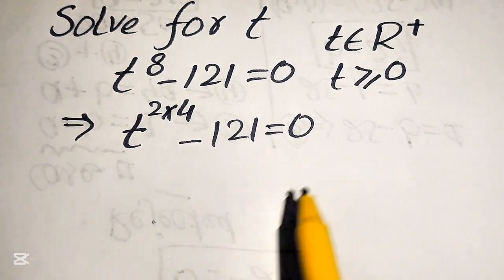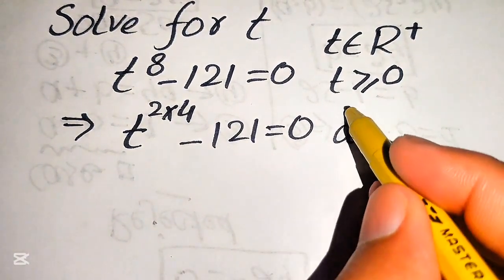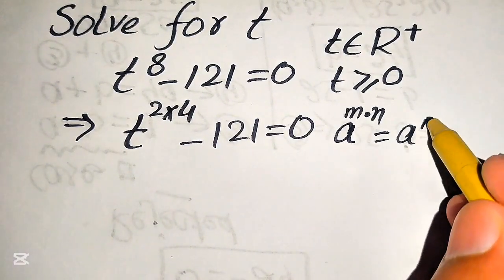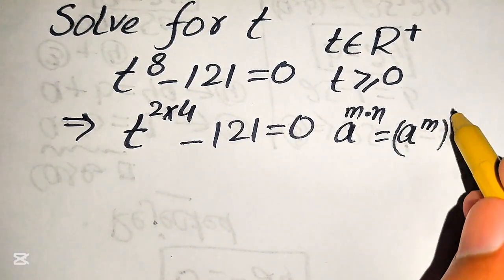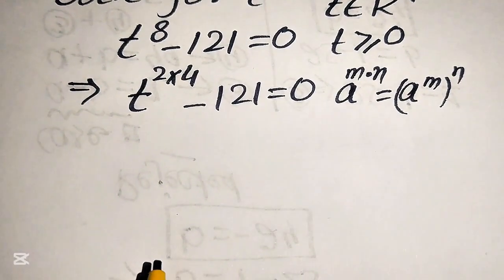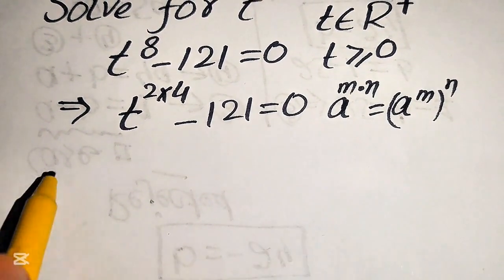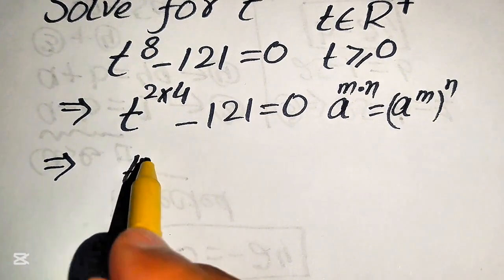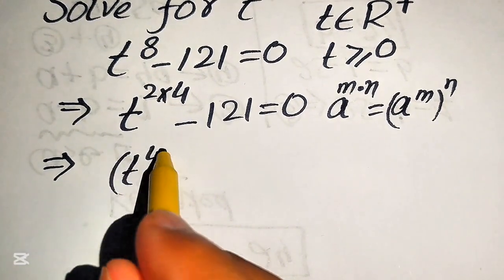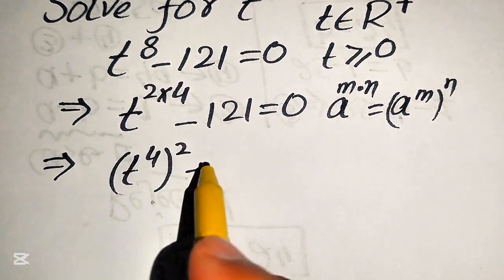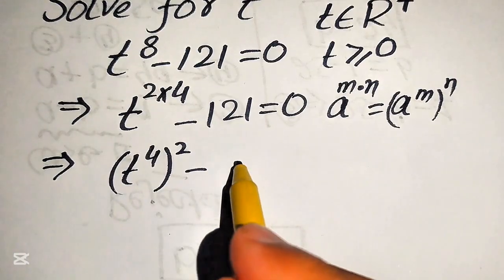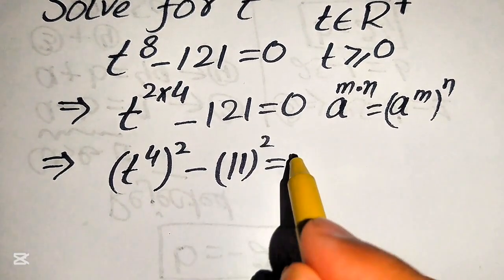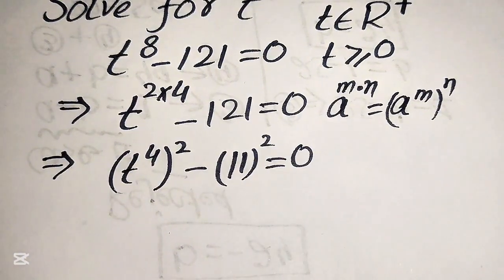Now we use the exponent law: a to the power of m multiplied by n can be written as a to the power of m, raised to the power of n. According to this law, we move the 4 inside the term, so it becomes t to the power of 4, whole squared, minus 11 squared, equals 0.